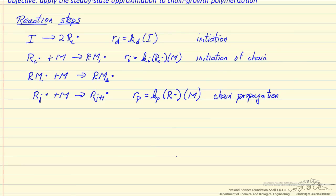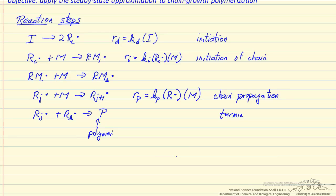The final step in this simple mechanism is when two of these growing chains — radicals r_j and r_k — collide to make a polymer. This polymer is no longer reactive. This is referred to as the termination step, which terminates the growing polymer chain. The rate of termination is a rate constant for termination times the concentration of radicals.